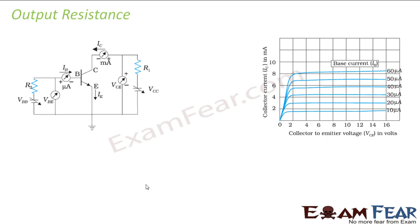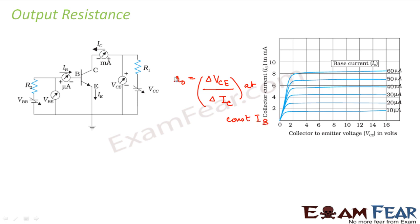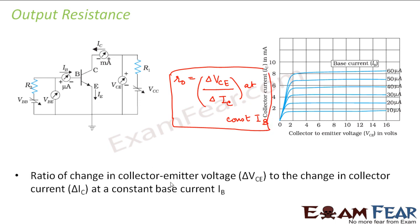The next one is the output resistance. Output resistance is defined in a very similar way using the output characteristic graph. It is the ratio of change in collector-emitter voltage to the change in collector current at constant base current.